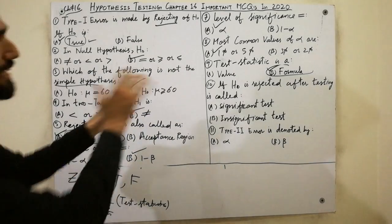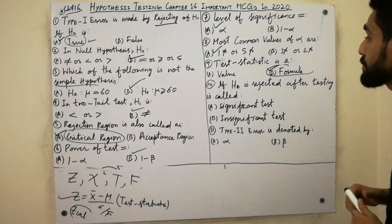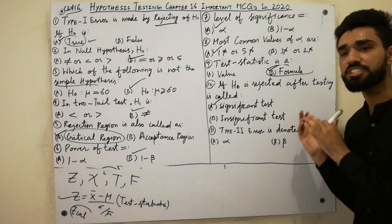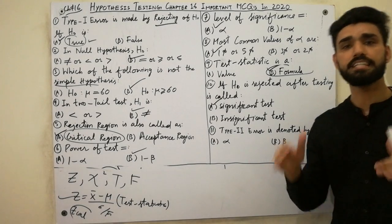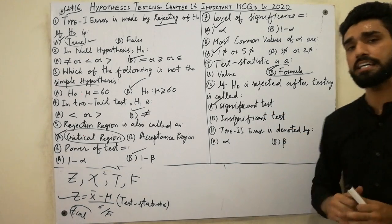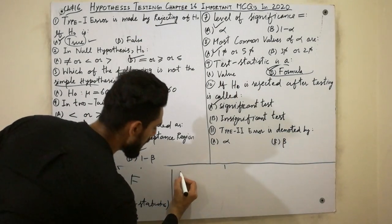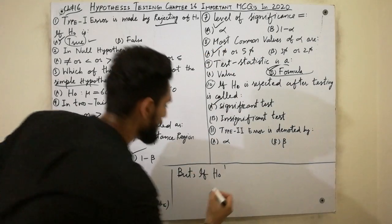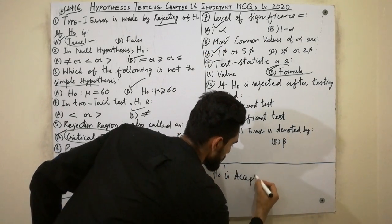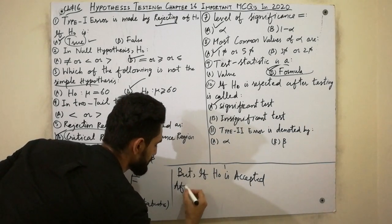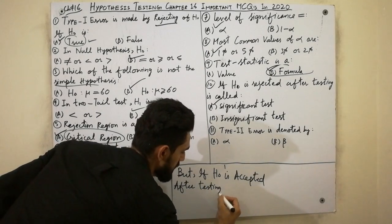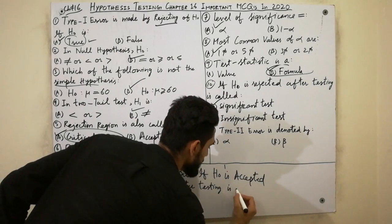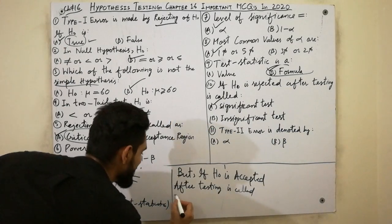The tenth MCQ: if H-naught is rejected after testing, the test is called significant. But if H-naught is accepted after testing, the test is called insignificant. Must remember: rejected H-naught means a significant test; accepted H-naught means an insignificant test.